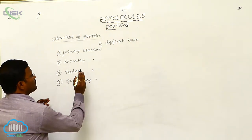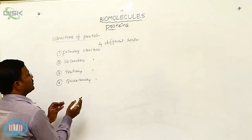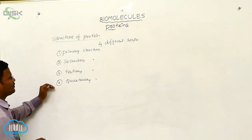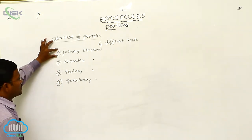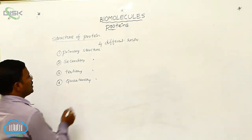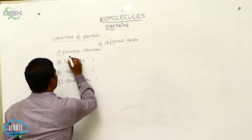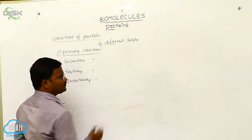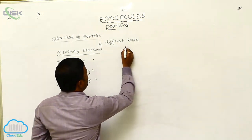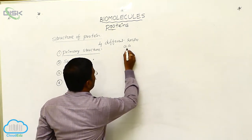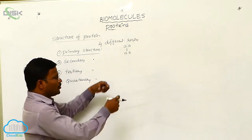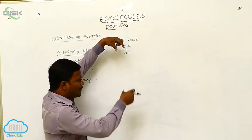The structure or shape of protein is represented and explained in four different methods: primary structure, secondary structure, tertiary structure, and quaternary structure. In primary structure, when one amino acid is connected with another amino acid, they form a long polypeptide chain.